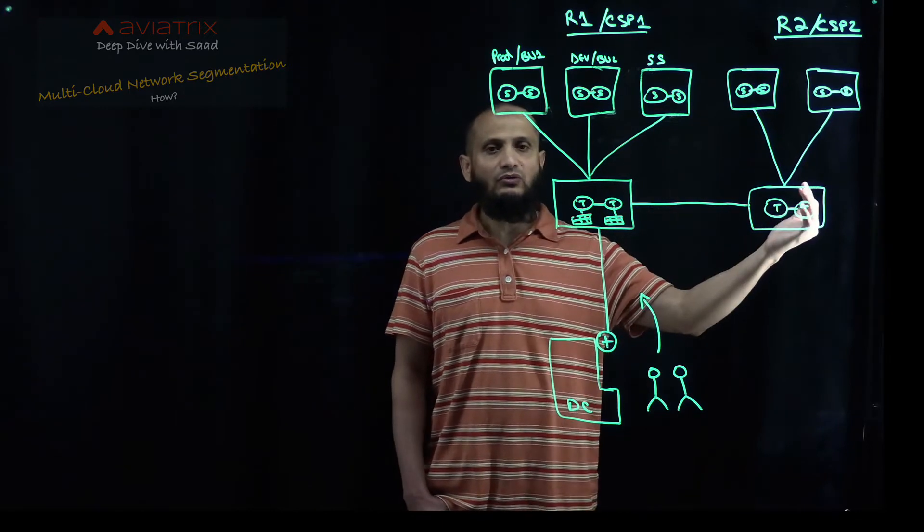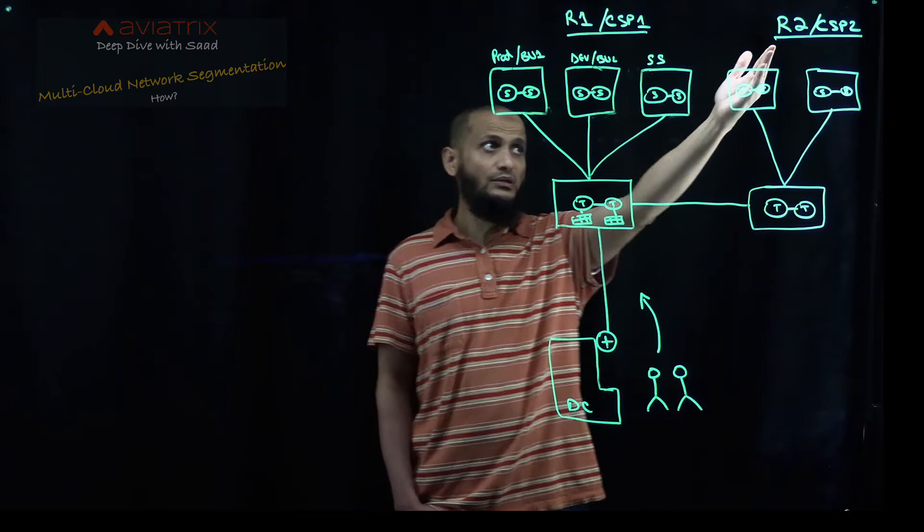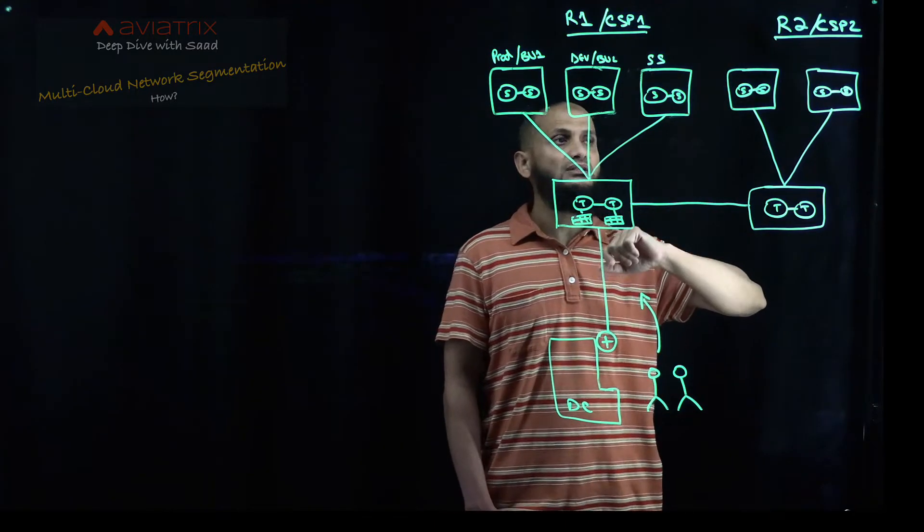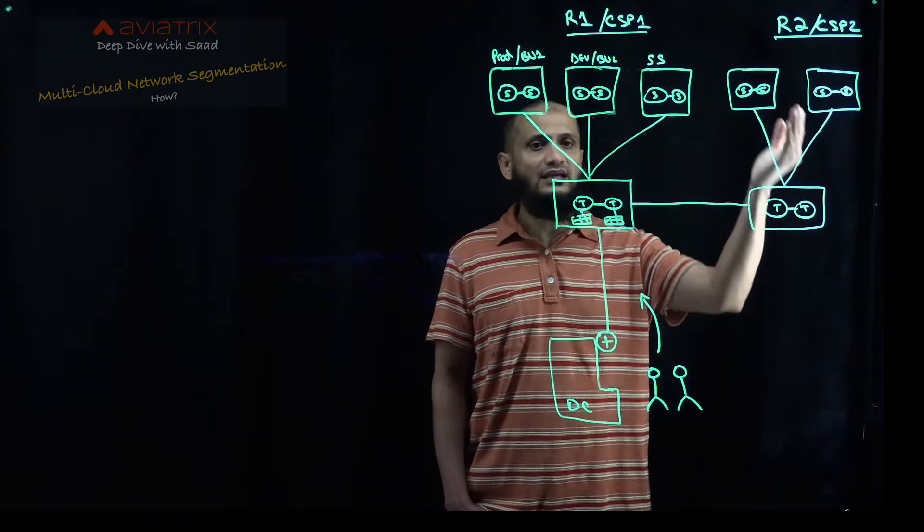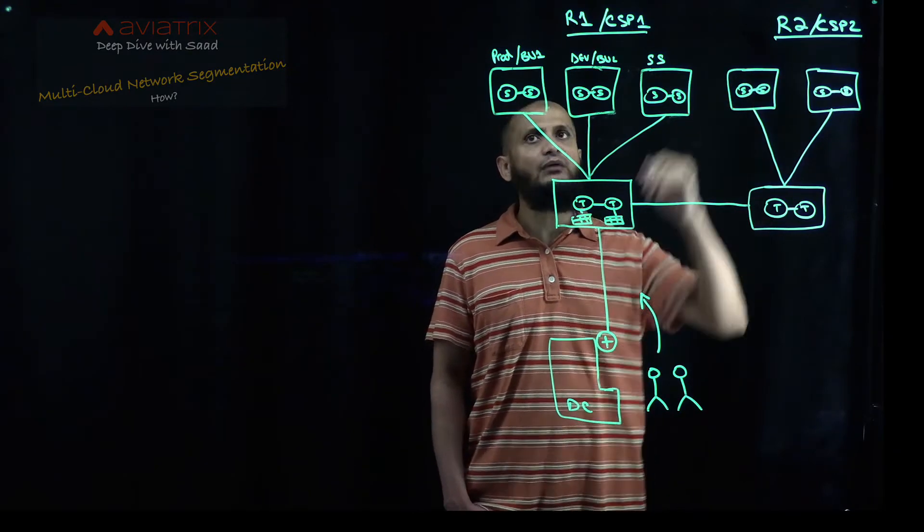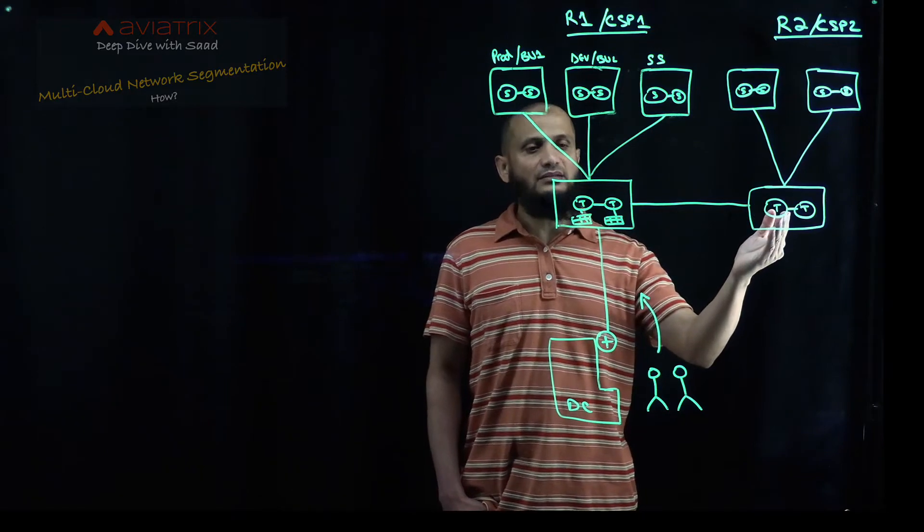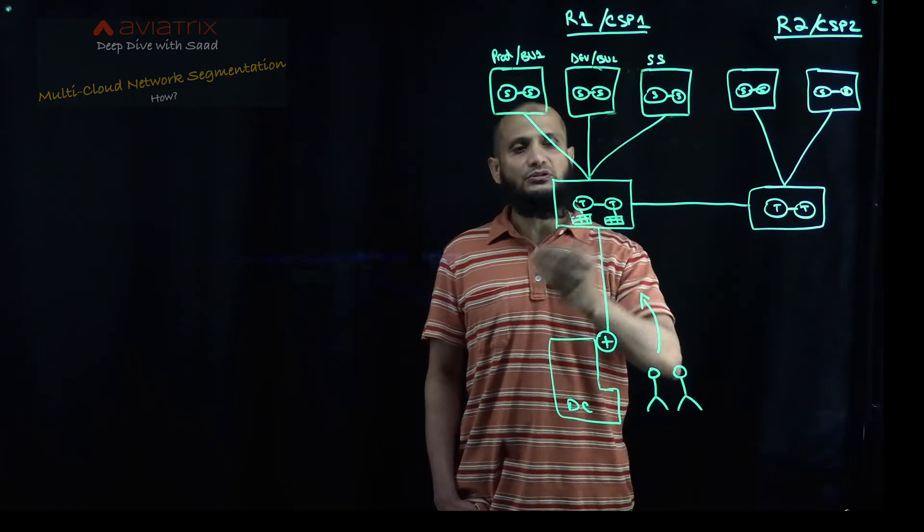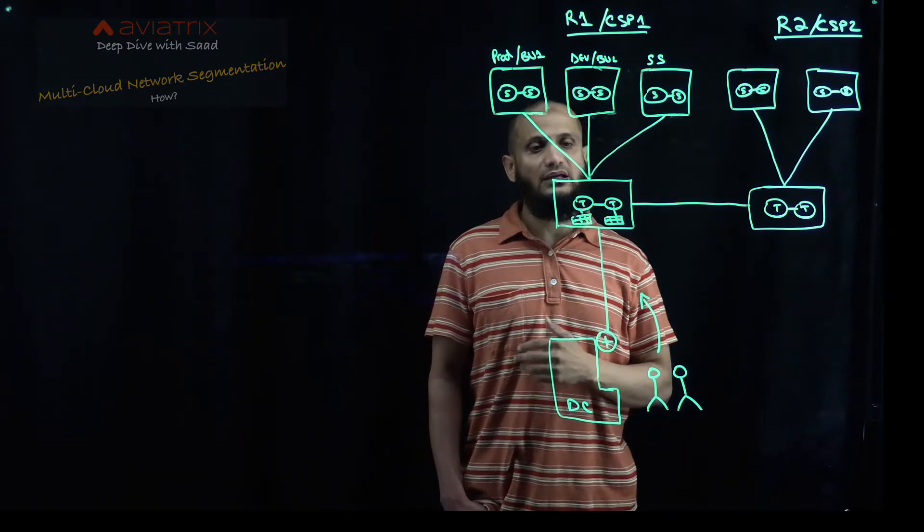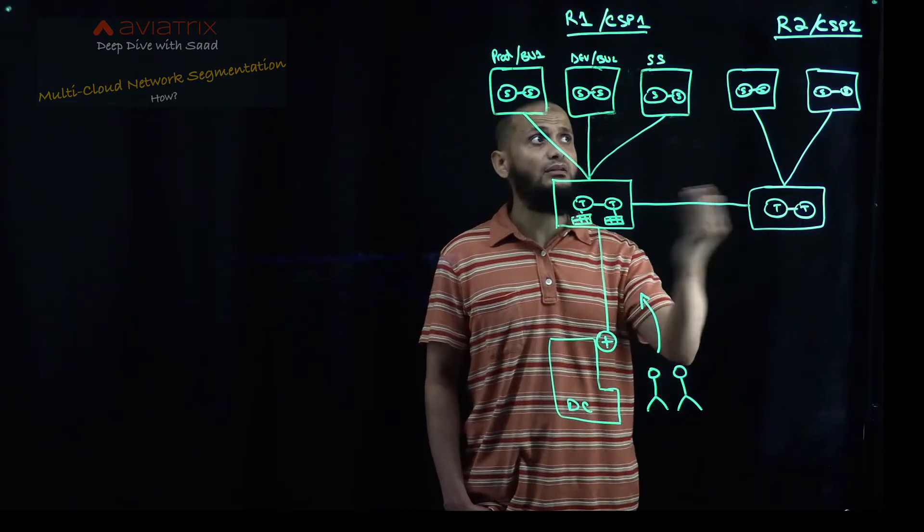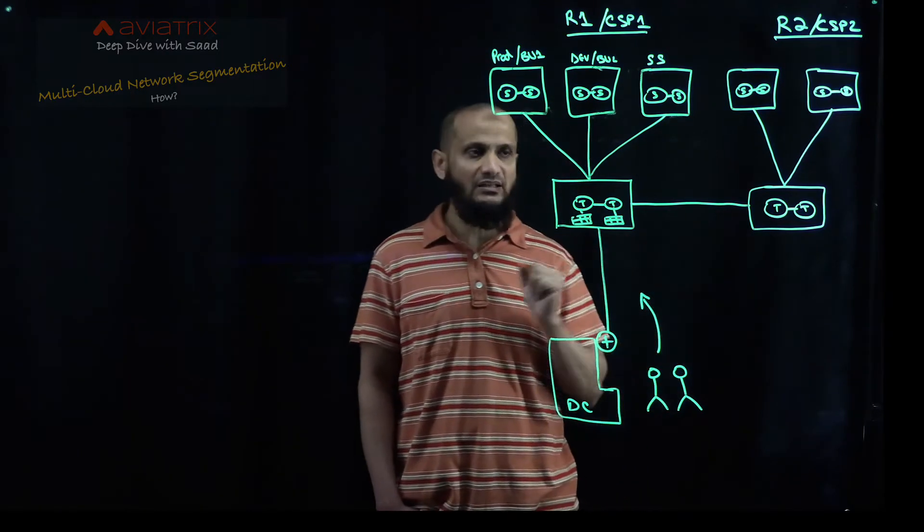There is a multi-cloud or multi-region aspect on the other side as well, which I'm calling it either it's a region two or CSP2. It has its own resources, it has its own environment over here too. And then it's connected to the transit, and then transits are connected to each other, whether they are connected through the colo, or they are connected over the internet, or maybe if they are the same region, they are connected using the cloud service provider's backbone. It could be anything.